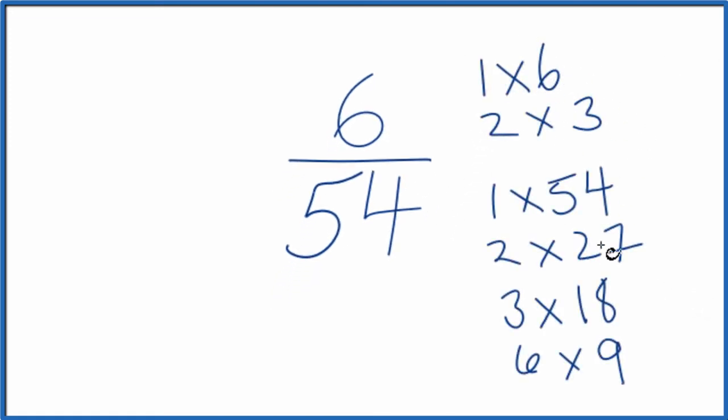As I look at the factors for 6 and 54, the greatest common factor, that is 6. So 6 goes into 6 and 54. So we'll divide 6 by 6 and 54 by 6, and we'll simplify the fraction 6 over 54.